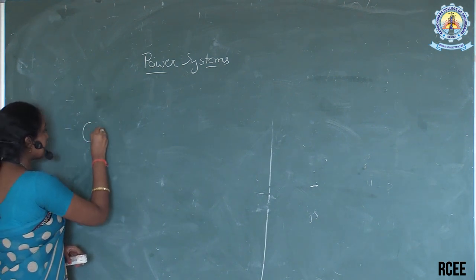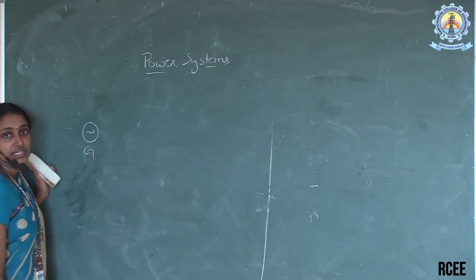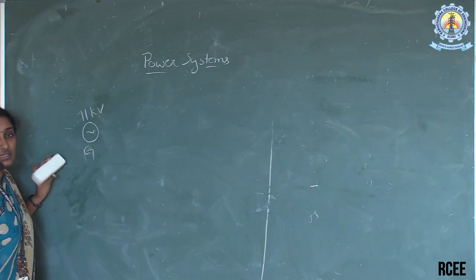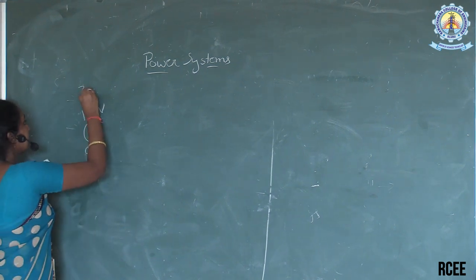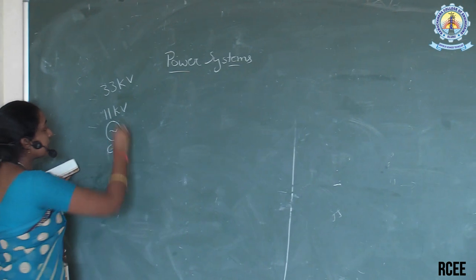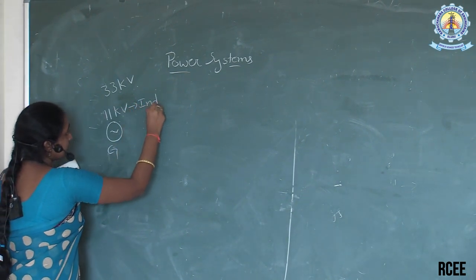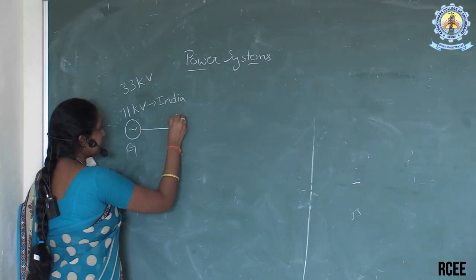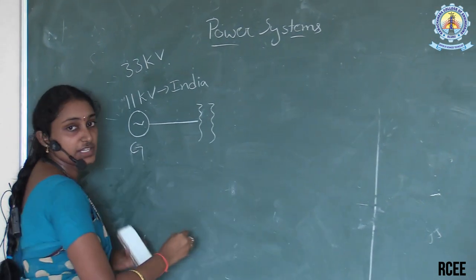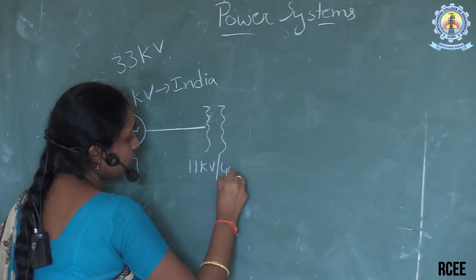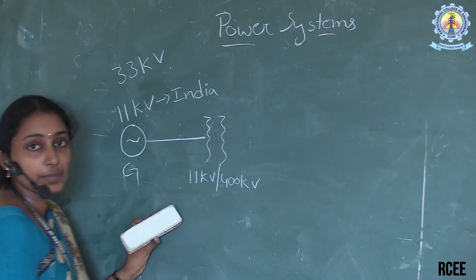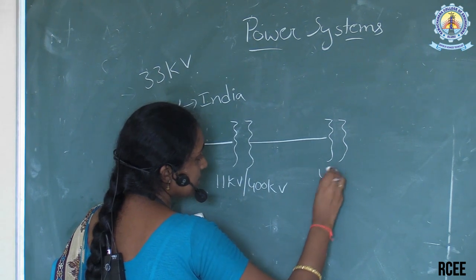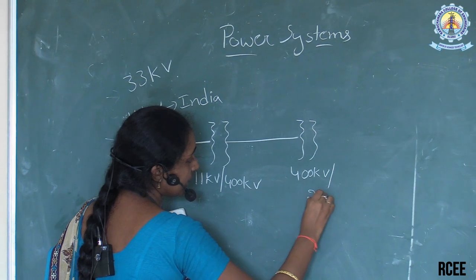If you have a generating station here — in India, generally in generating stations, 11 kV is generated. In developed countries, nearly 33 kV is generated, but in India, 11 kV is generated. From the generating station at 11 kV, we use a step-up transformer. That 11 kV is stepped up to 400 kV, and then 400 kV is stepped down to 220 kV.